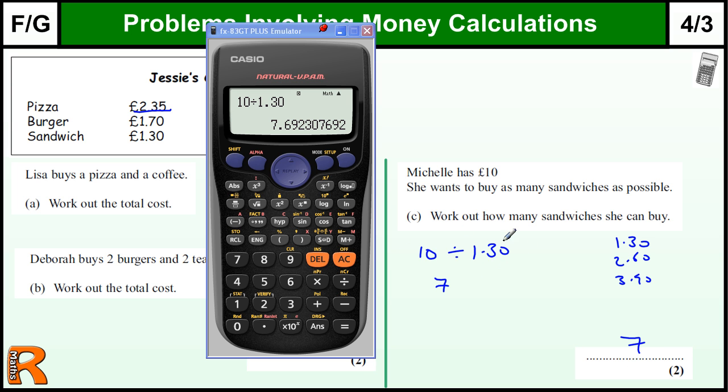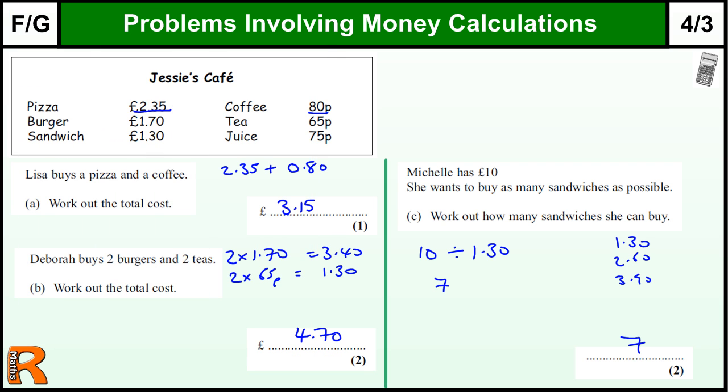Or if you write a list of numbers here, again that's a method mark - that's showing you know what to do, you just might mess up the answer. Going back through this, if you have the calculations written down but you mess up the answer...